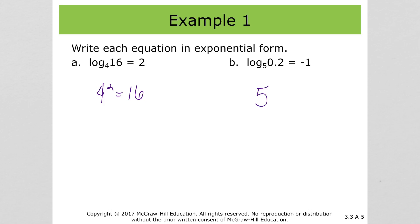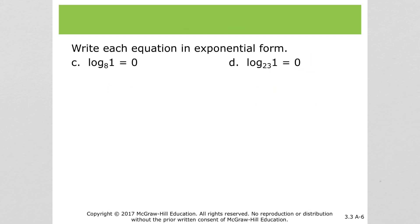For part b, we have 5 to the negative 1 equals 0.02 — I've just moved things around, the base to what it's equal to is equal to the 'of.' For part c, 8 to the 0 equals 1. And for part d, 23 to the 0 equals 1. Both of those are true — we know by exponential rules that anything to the 0 is equal to 1.